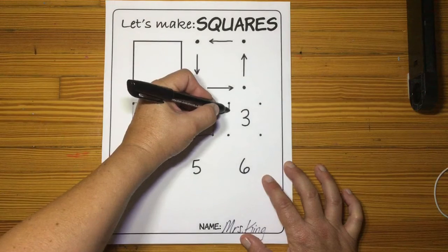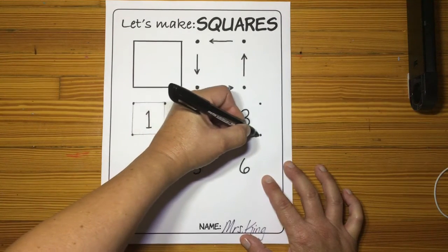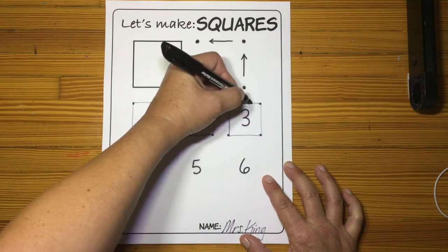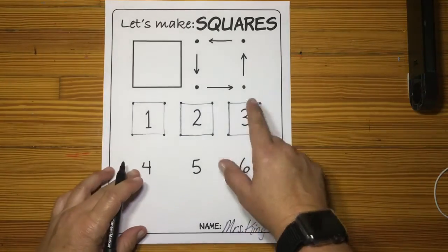Number three, down, to the right, back up, and close it for the three.